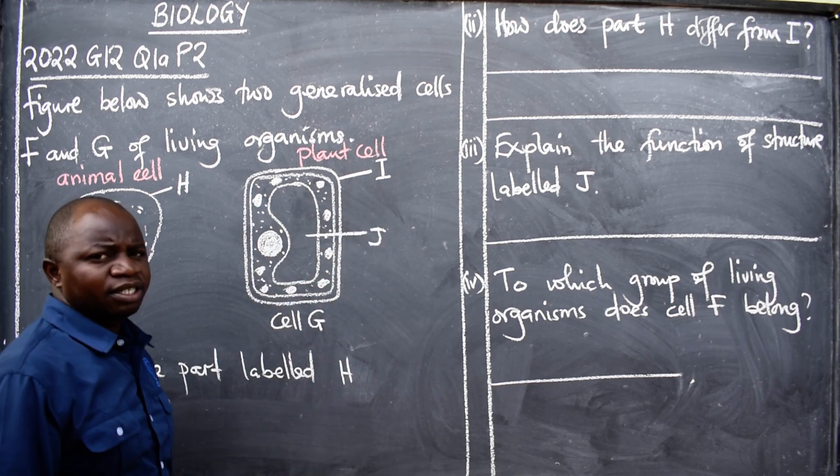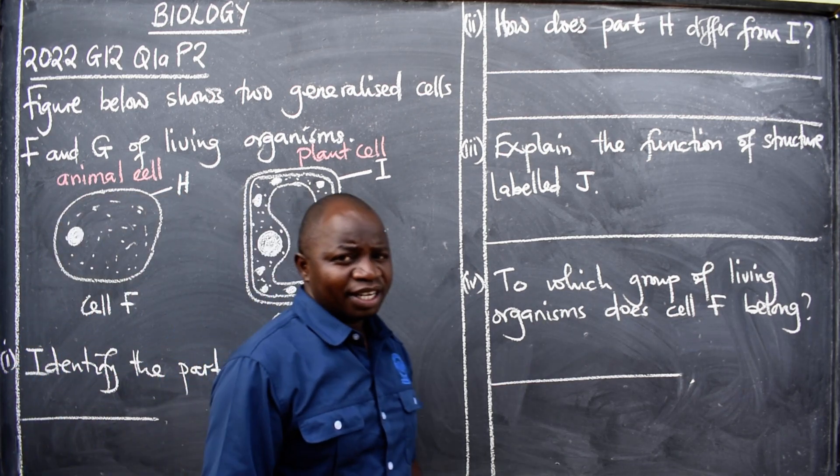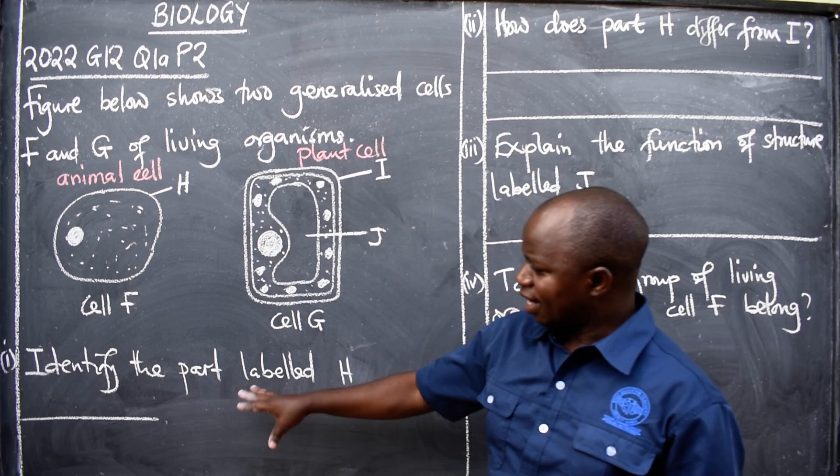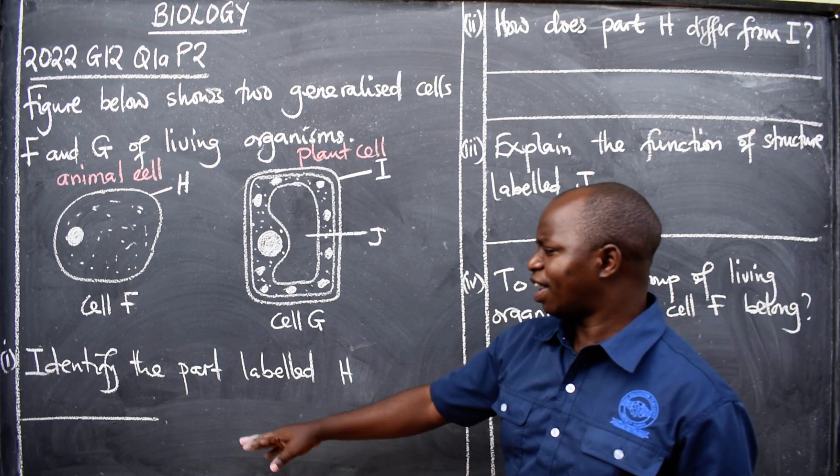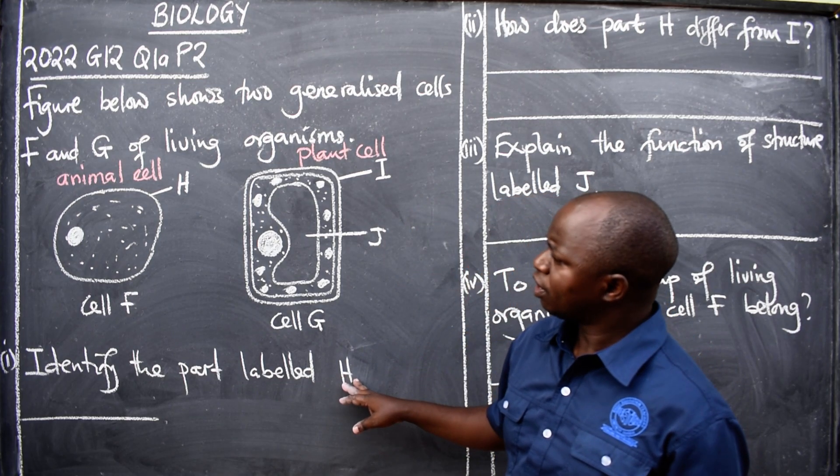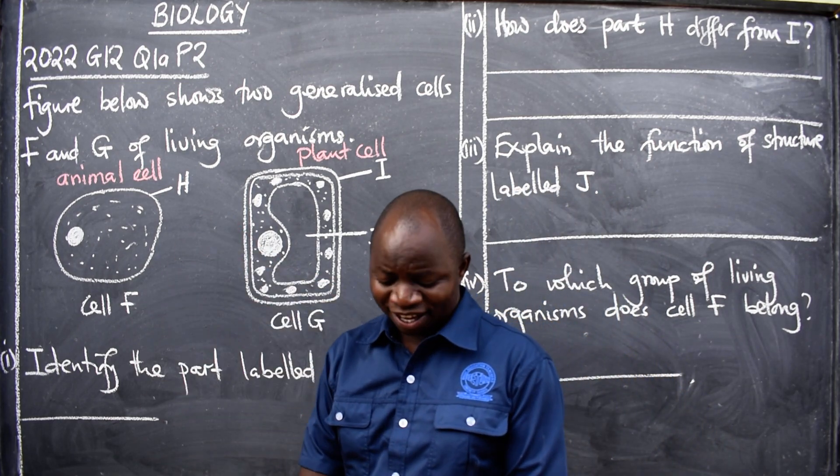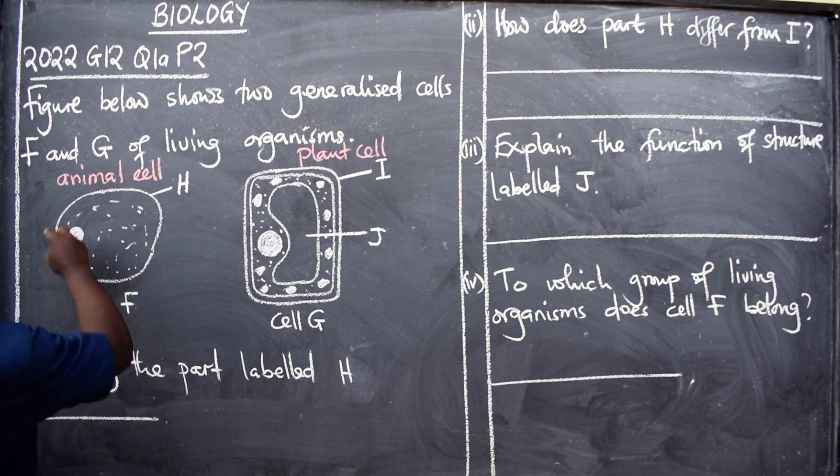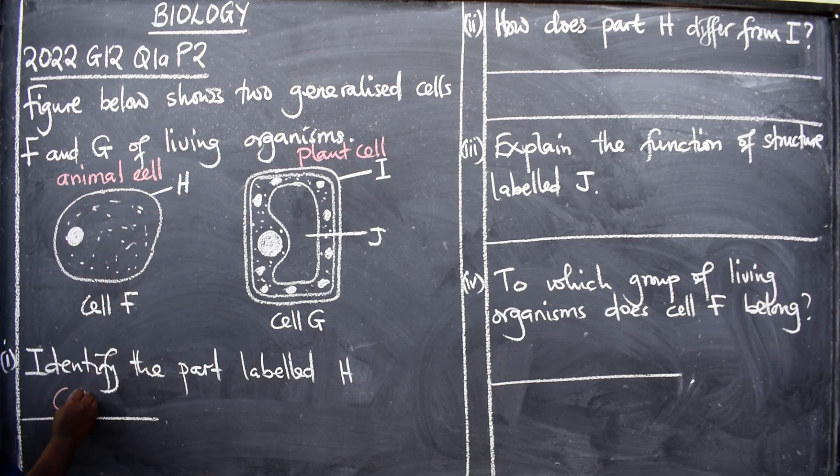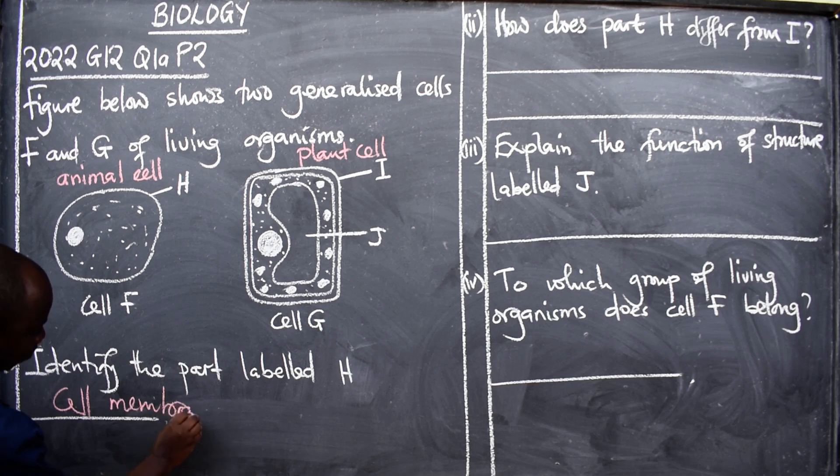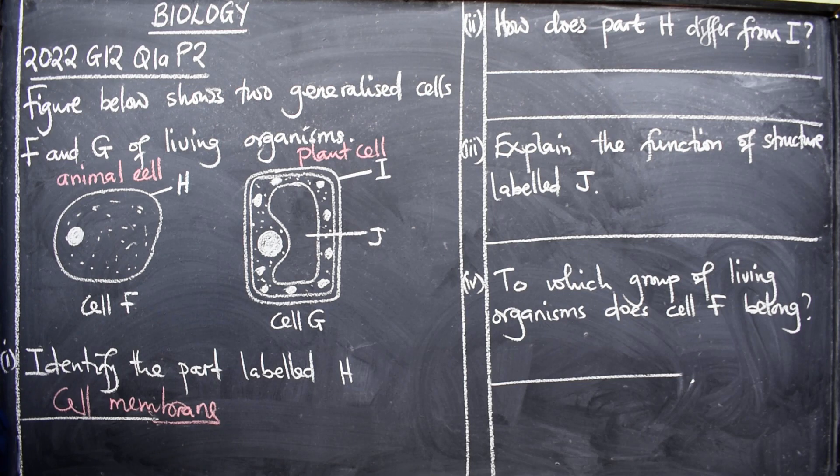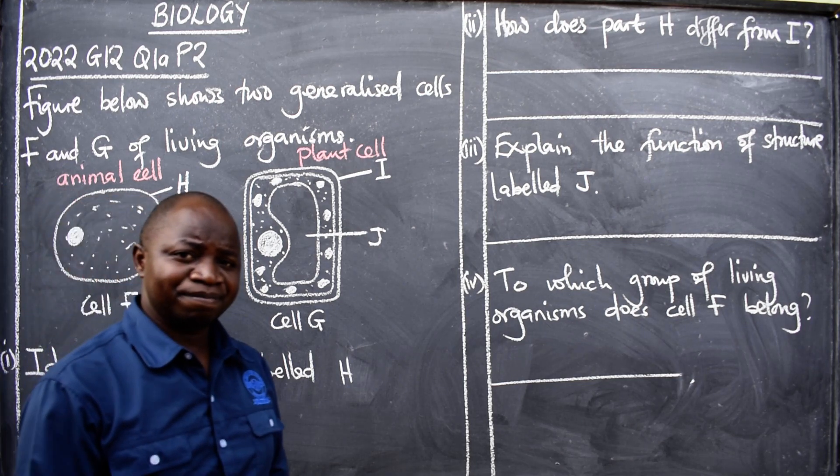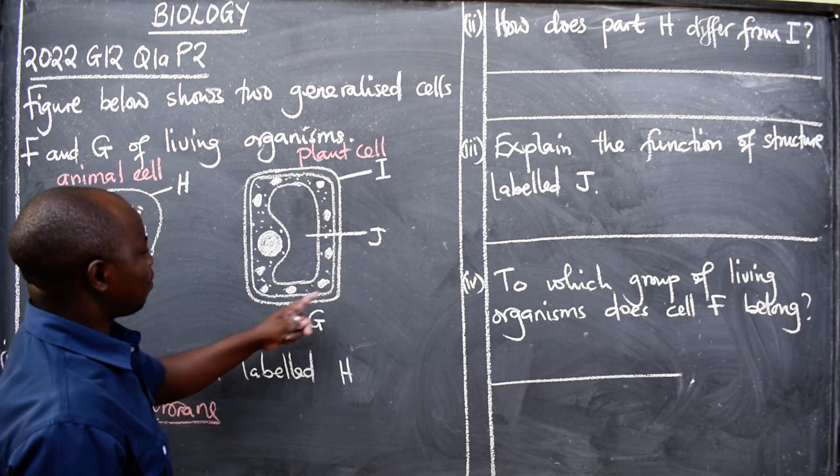Then this one is a plant cell. This one is a plant cell with the outer ring called cell wall. With that in mind let's proceed. Identify the part labeled H. I think I've already said the answer: cell membrane. This one here, this is cell membrane. So it says cell membrane.